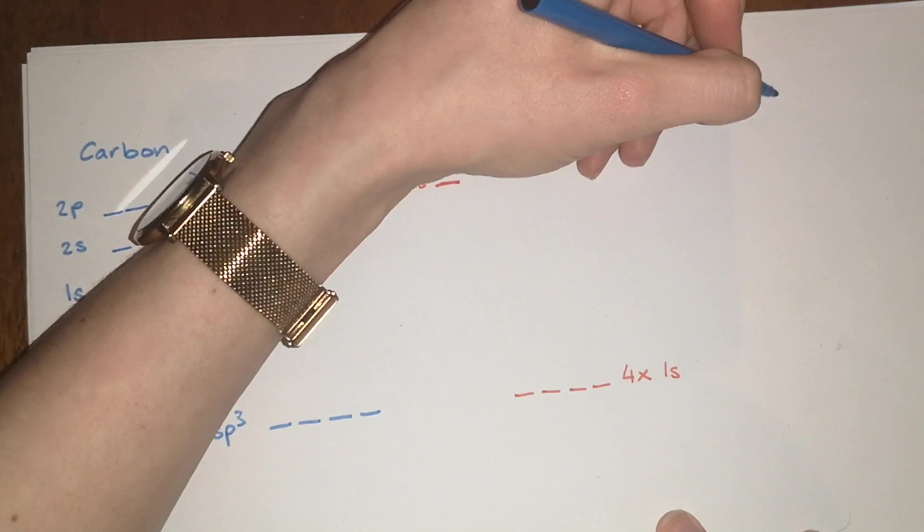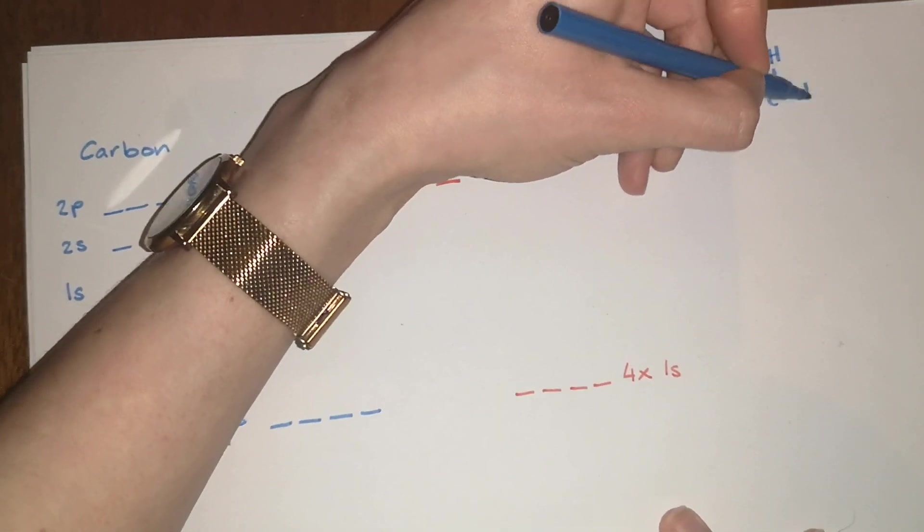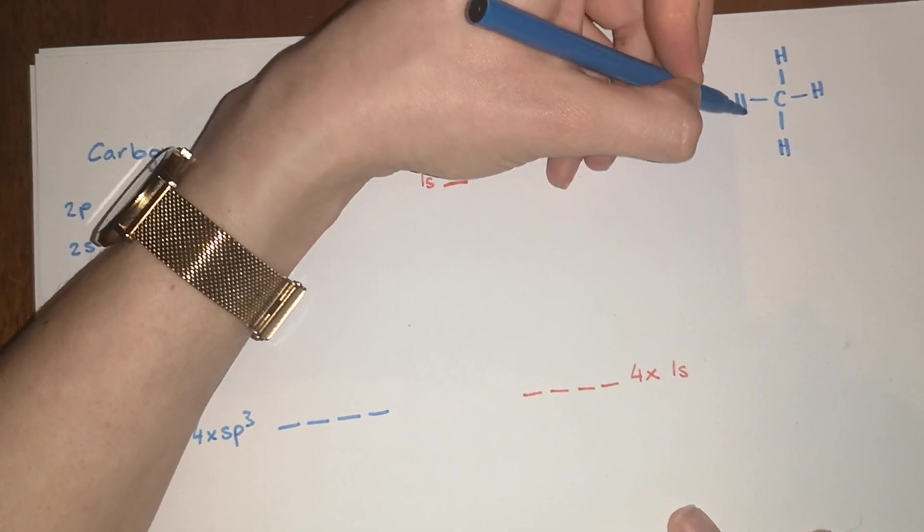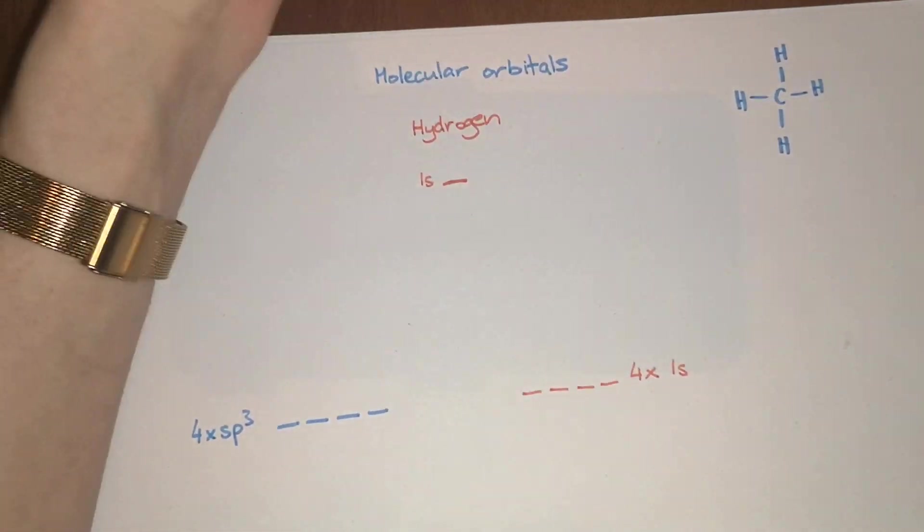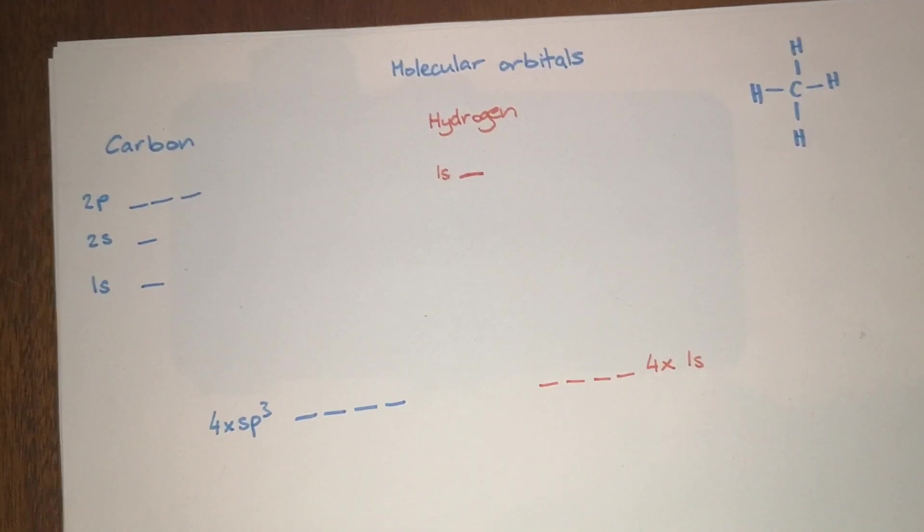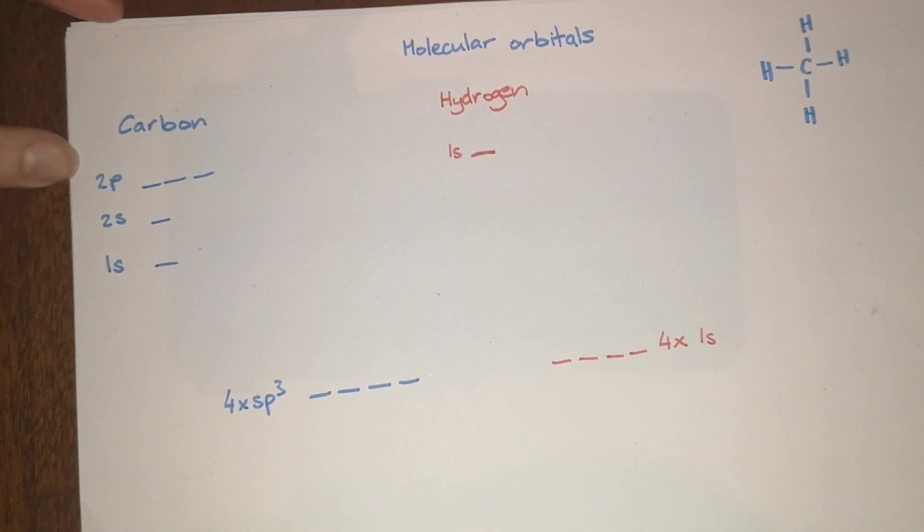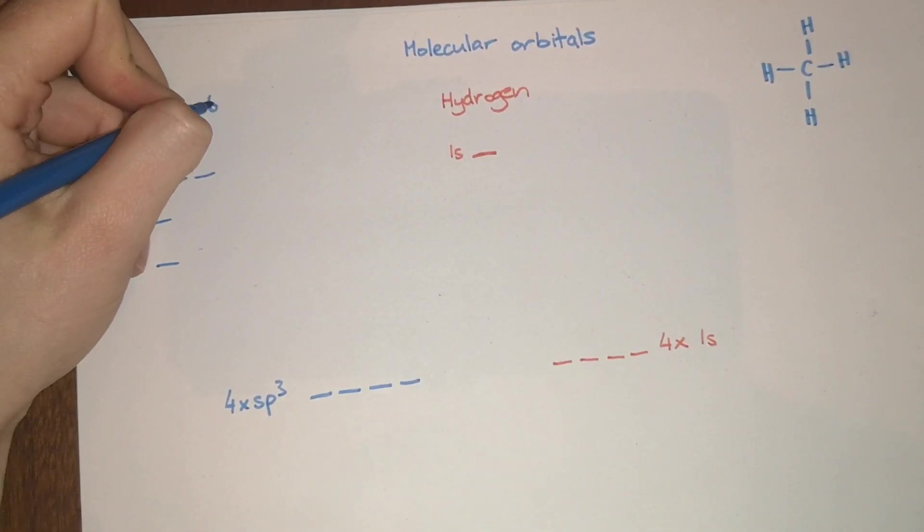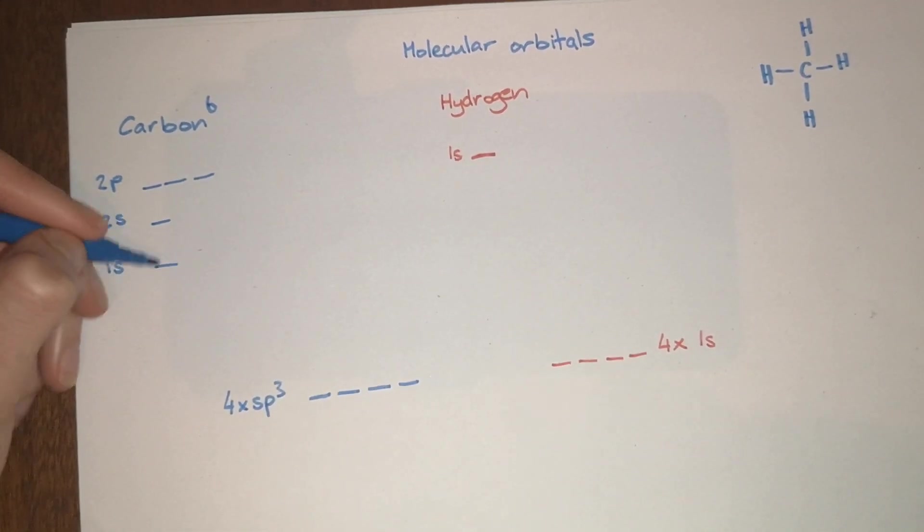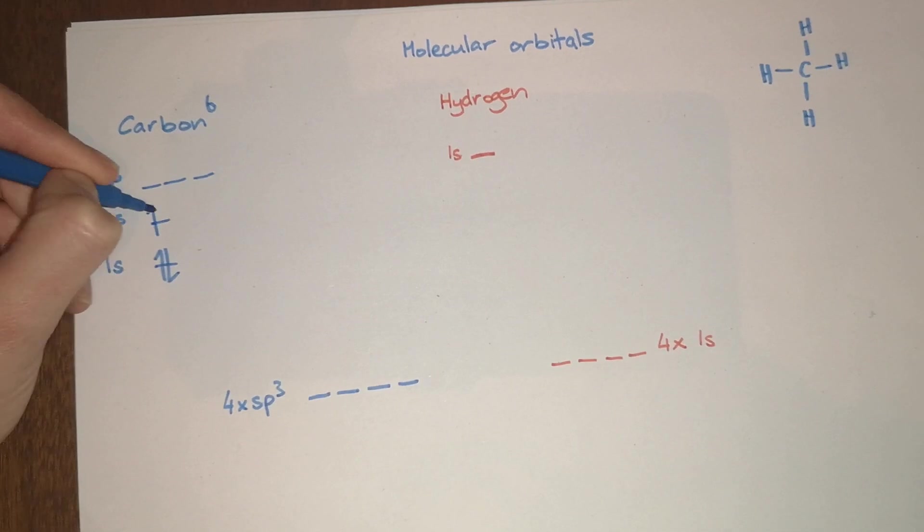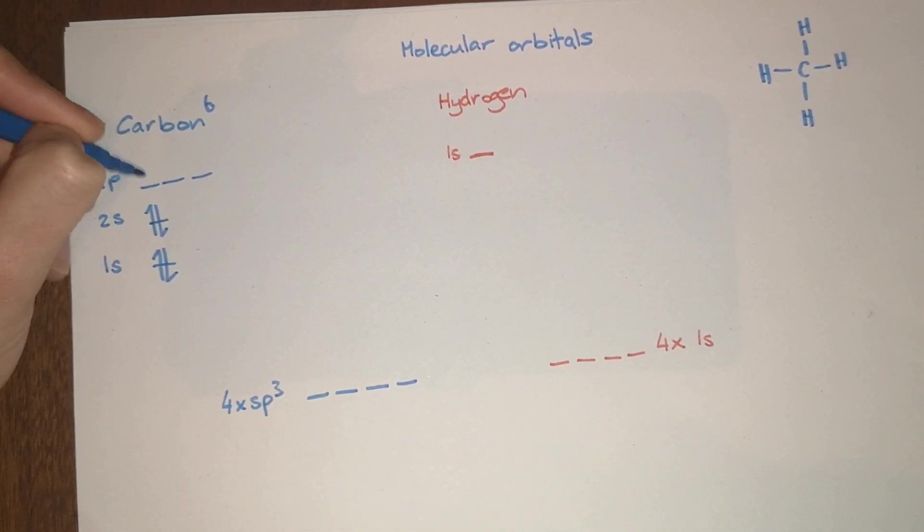However, if you take the example of methane, which is a carbon with four single bonds to hydrogen, you now have to show the orbitals of four separate hydrogen atoms as well as the orbitals of a carbon. Hopefully you have seen the other video where we talk about hybridization of carbon, but if not we'll do a quick revision. Carbon has six electrons.